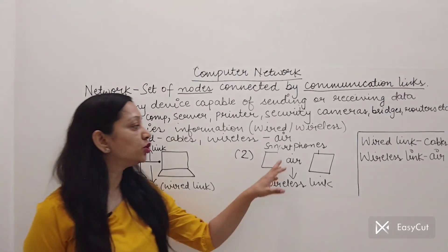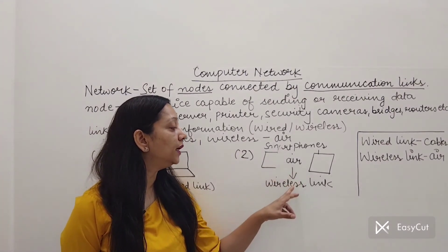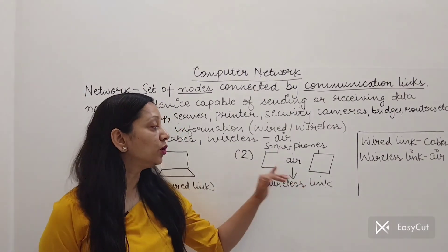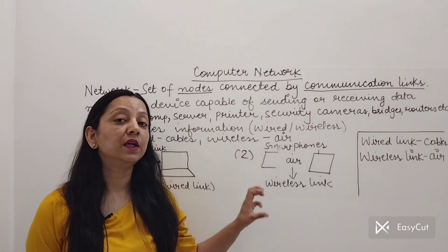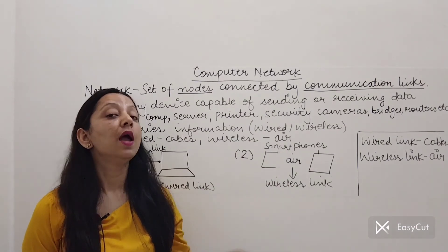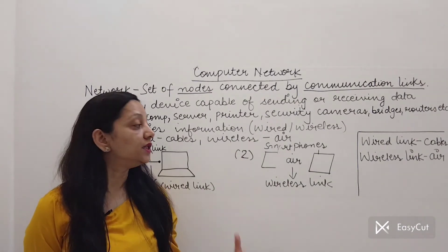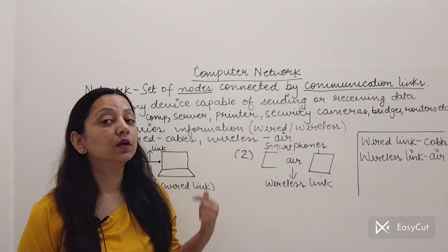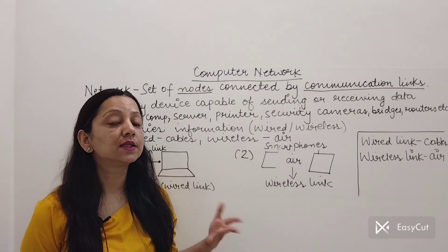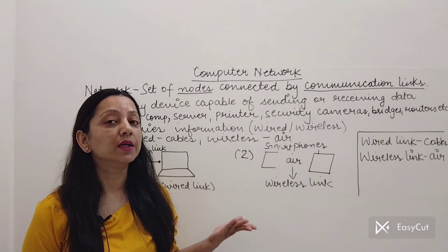Now the second example shows you two smartphones connected through air. You cannot see any physical link between these smartphones. So if there is no physical link, how are they communicating? They are communicating through air. So such a link would be known as a wireless link. That means no wires.